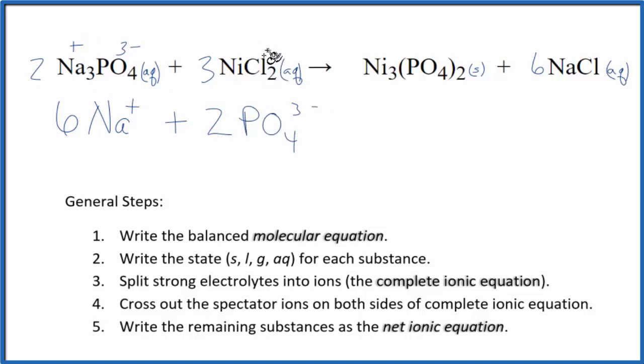The chloride ion is always a 1 minus, and we have 2 of them, so the nickel is 2 plus. That's why we were calling it nickel 2. So we'll add 3 times the 1 nickel ion, 3 nickel 2 plus ions, plus 3 times 2 is 6 chloride ions. So these are the reactants.